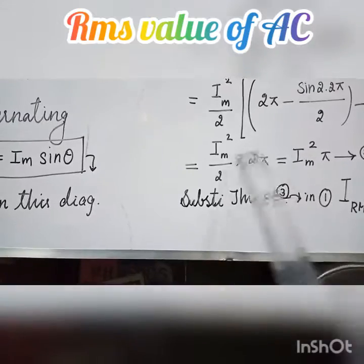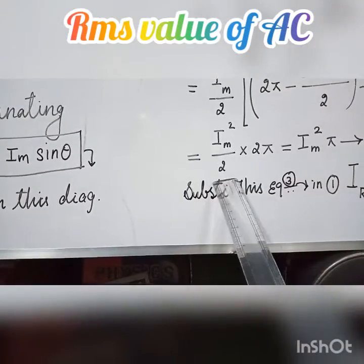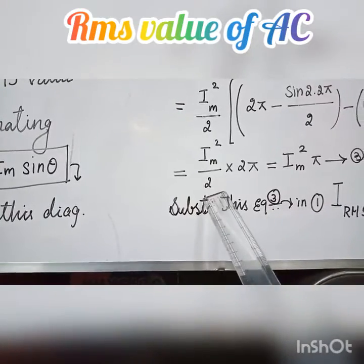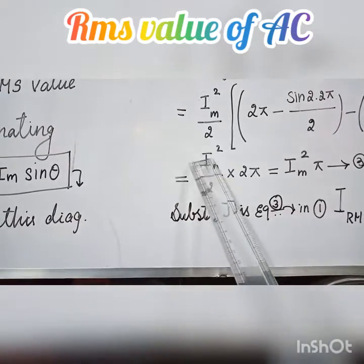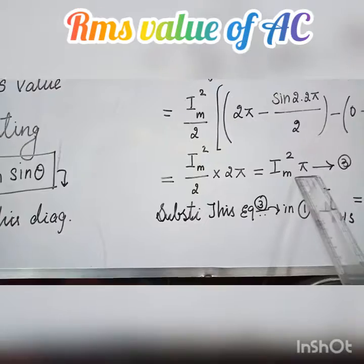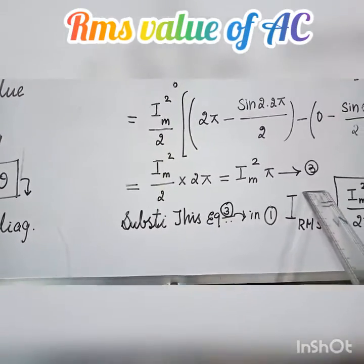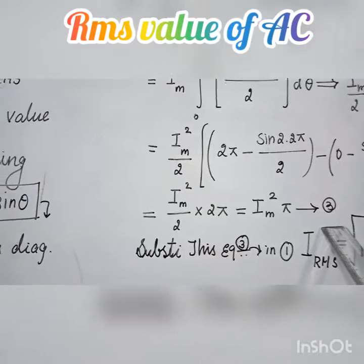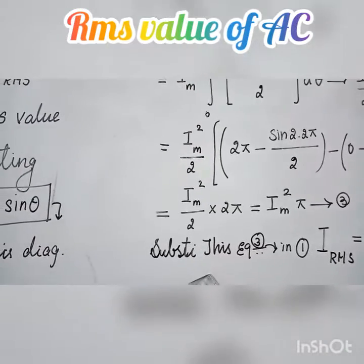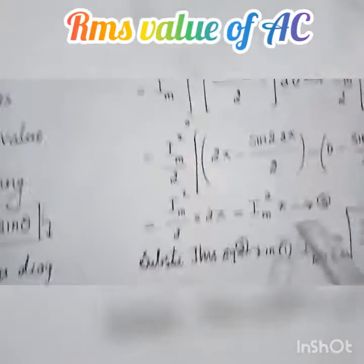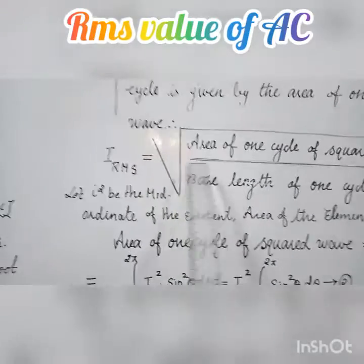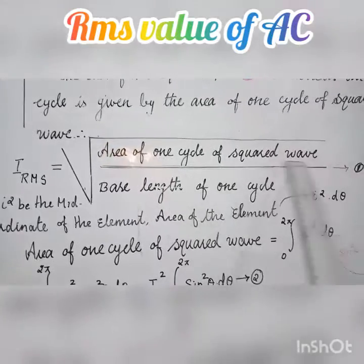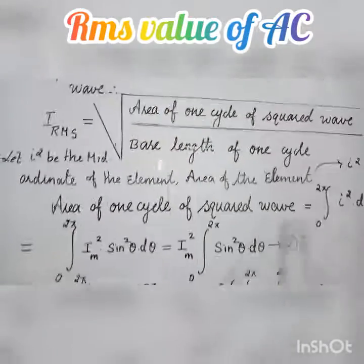So I_m²/2 multiplied by 2π, with the 2s cancelling, gives the remaining value equal to I_m² × π — this is equation (3). Now substituting this back into the first equation: I_RMS = square root of [area of one cycle of squared waveform divided by base length of one cycle].